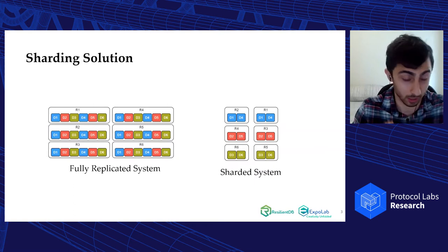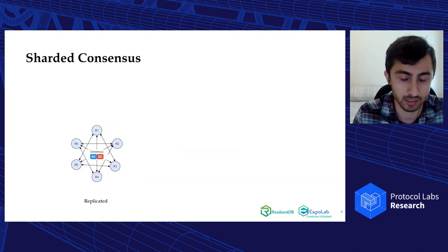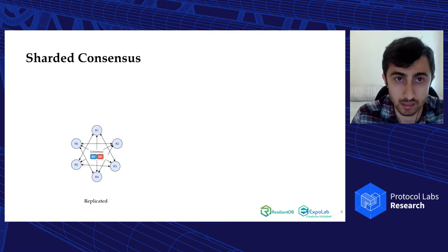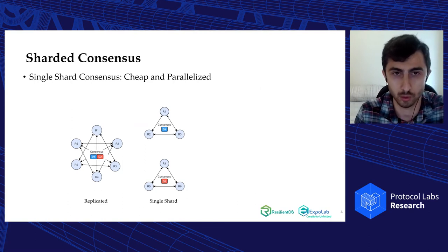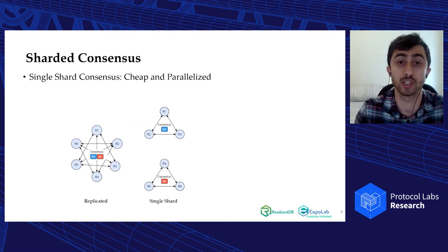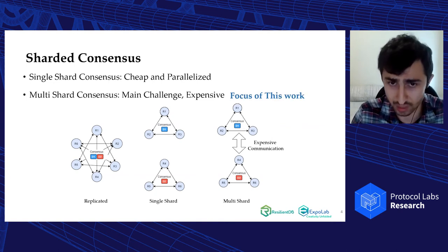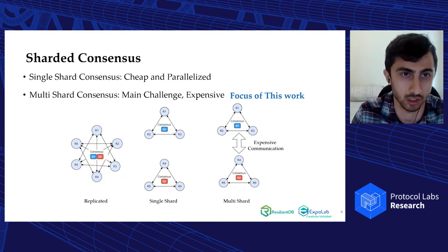One open avenue would be moving from a costly fully-replicated consensus protocol to a sharded consensus protocol. In a replicated consensus protocol, communication among all the nodes is required. But in the sharded consensus environment, there are two types of consensus. The first is single-shard consensus, which is common among most sharding protocols and is cheap and parallelized. The next one, which is the focus of this work, is the multi-shard or cross-shard transaction, which is the main challenge of sharding consensus protocols and requires expensive communication among the shards.